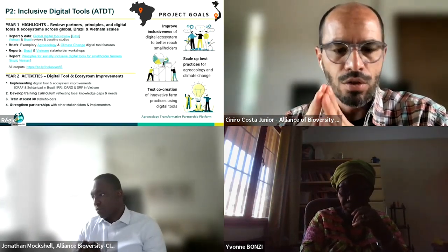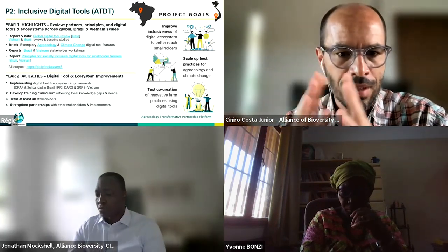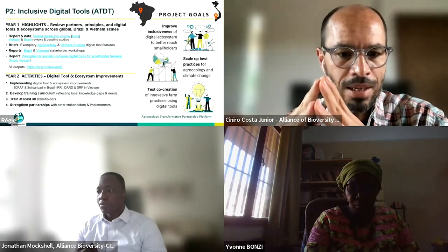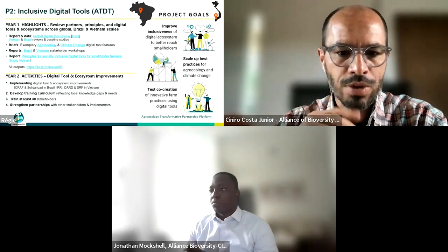Year one, the review phase, is complete. We have already published several materials, including global, Brazil, and Vietnam digital tool reviews, briefs on exemplary agroecology and climate change digital tool features, reports from stakeholder consultations run in both countries last year, and a guide describing principles for socially inclusive digital tools for smallholder farmers. All this material from year one is already published and publicly available — you can access it via the hyperlink provided.